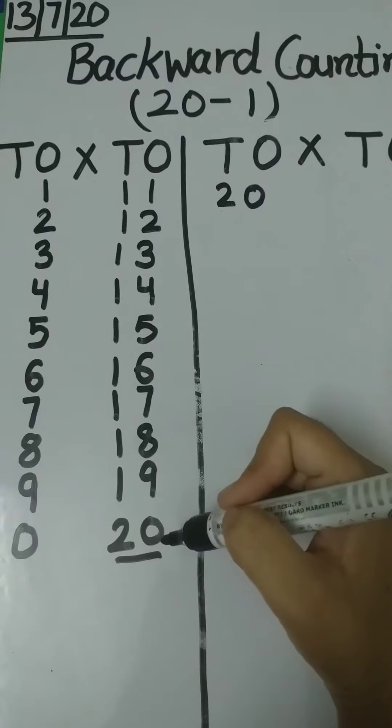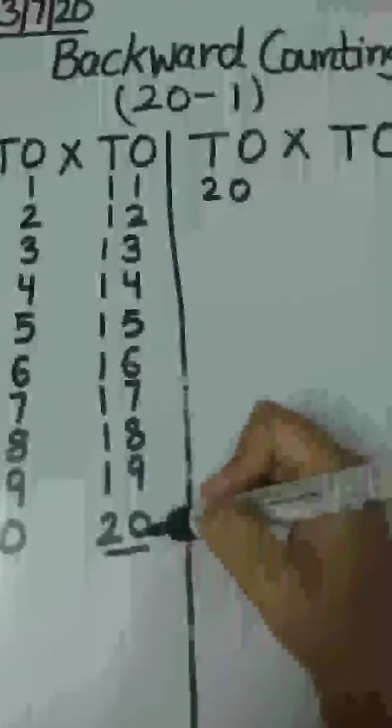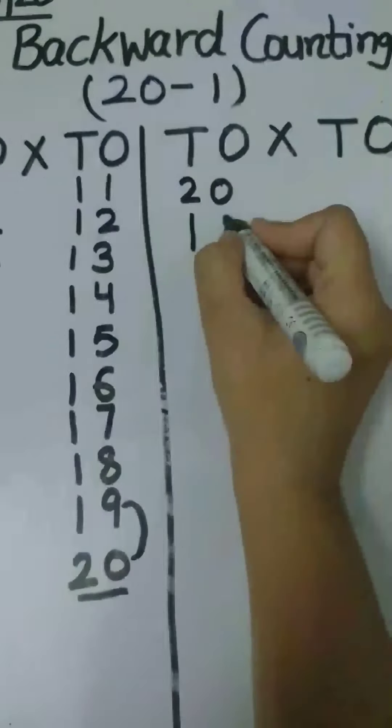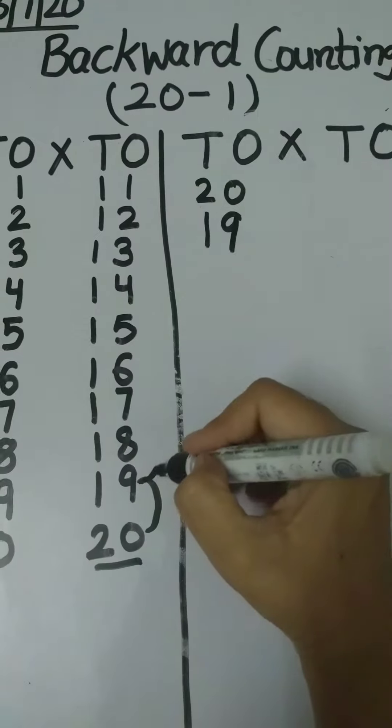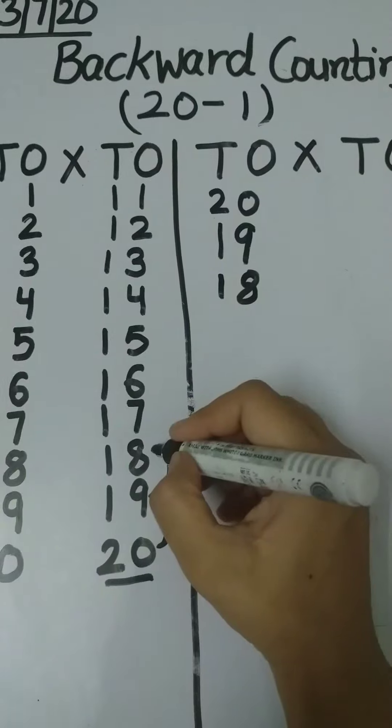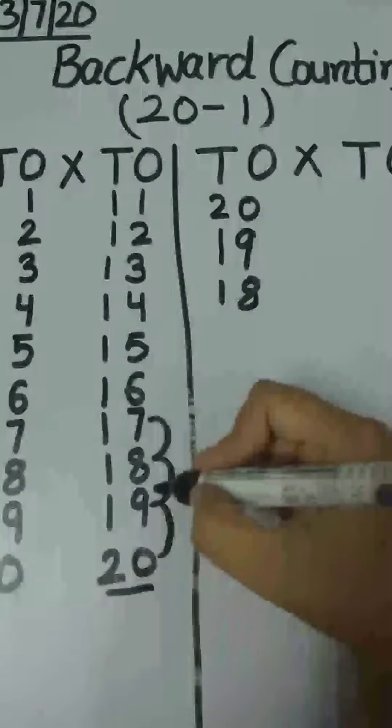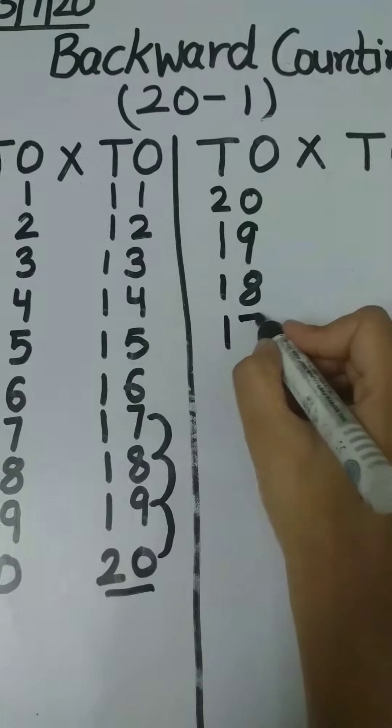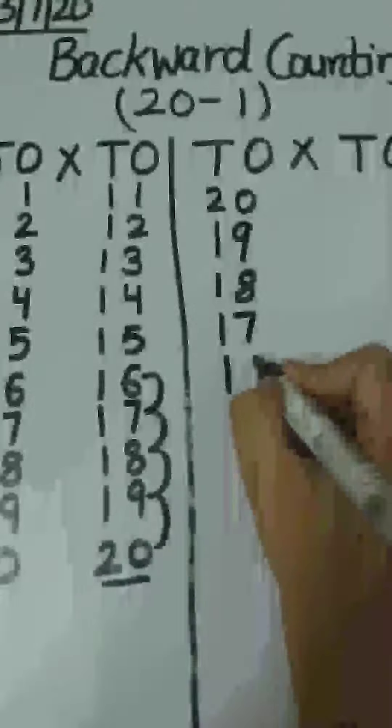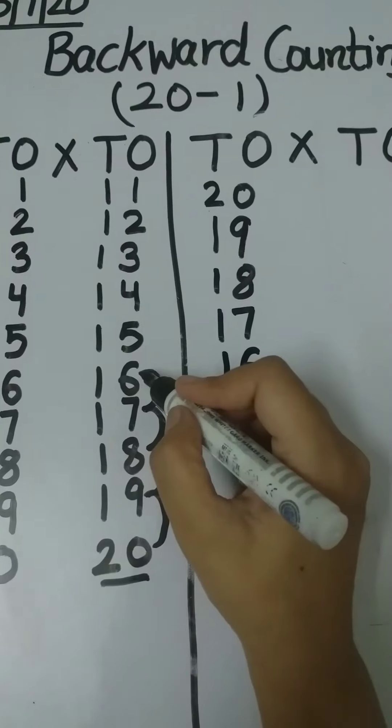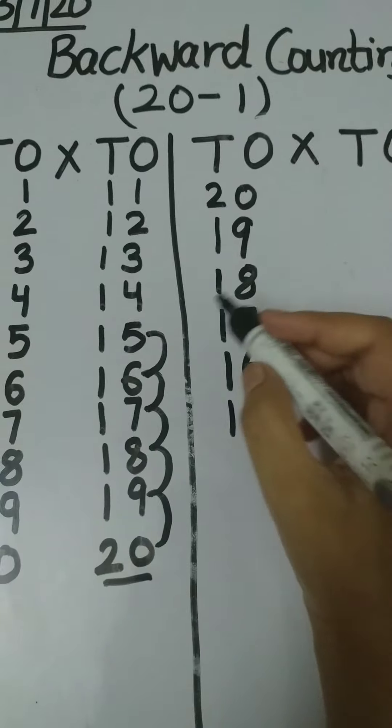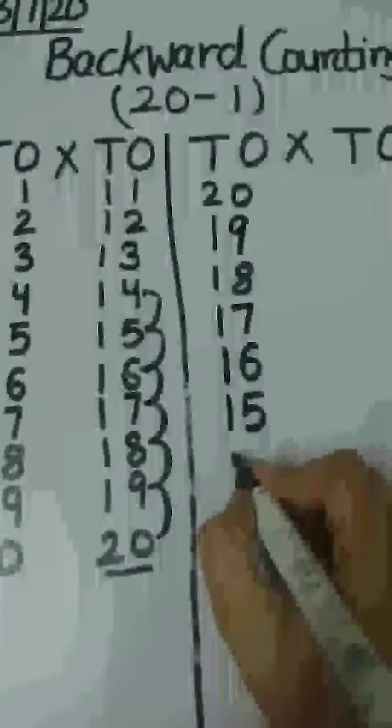Then tell me, what comes before 20? Yes, 19. Then 18. What comes before 18? 17. What comes before 17? 16. And what comes before 16? Yes, 15. Then 14.